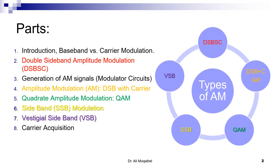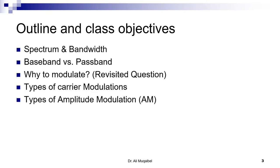For this first part, we want to recall the meaning of spectrum and bandwidth, baseband versus passband, why we modulate, and then look at the types of carrier modulation and specifically the types of amplitude modulation.